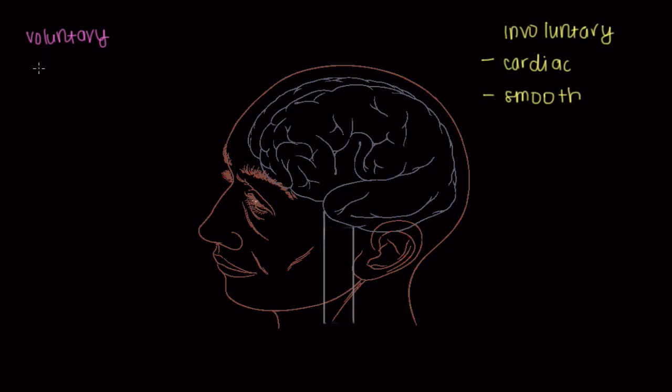What about on the flip side over here? For voluntary control, which of the three types of muscle do you think is under voluntary control? Well, if you said skeletal muscle, striated skeletal muscle, you'd be absolutely correct. So that's how we split that up.